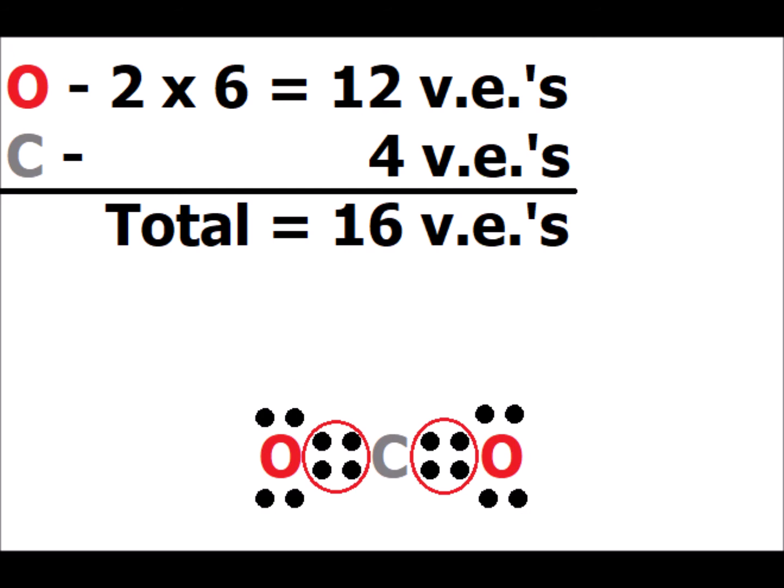Multiple bonds — double, triple, or otherwise — are a complication in the theory. We have to treat all the electrons that make up a double or triple bond as one unit, which we are going to call a domain. So instead of keeping electron pairs away from each other, we extend the idea to keeping electron domains away from each other. For carbon dioxide, we see the two electron domains shown in red circles; each one consists of four electrons, two bonding pairs, and each accounts for a single double bond.